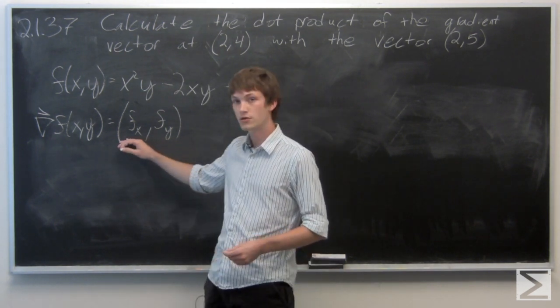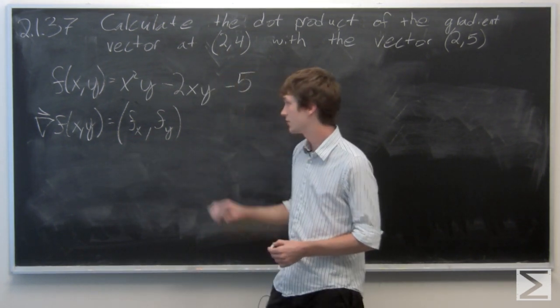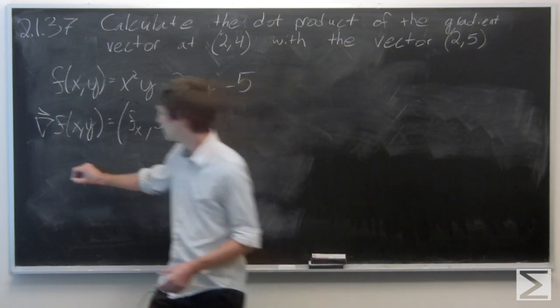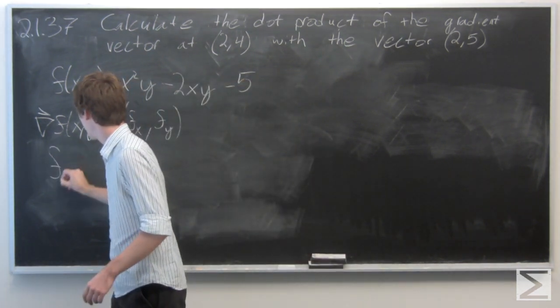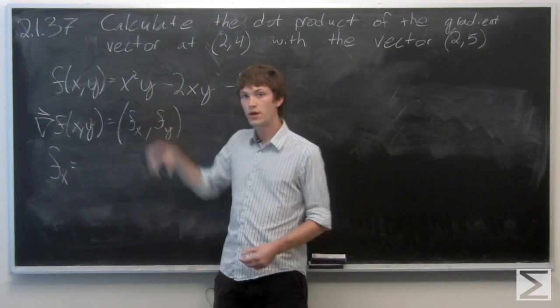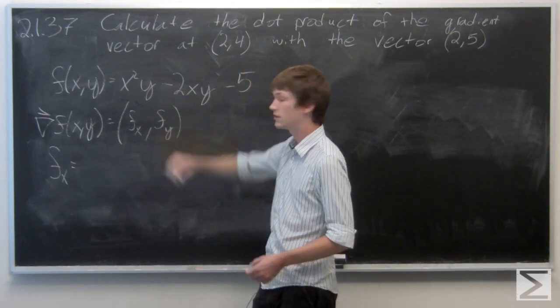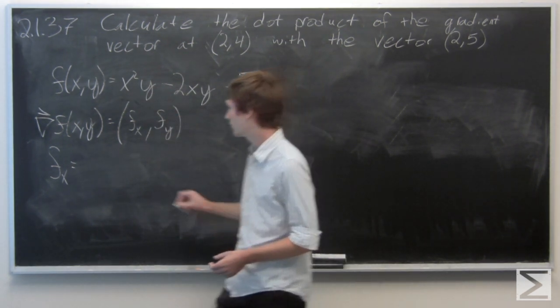So we'll calculate the partial derivative of f with respect to x. And we do this in the normal way, holding y constant and taking the normal derivative with respect to x.